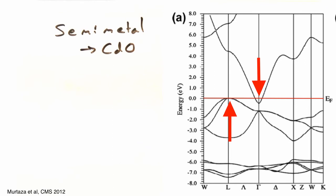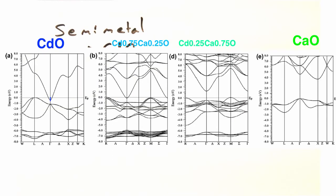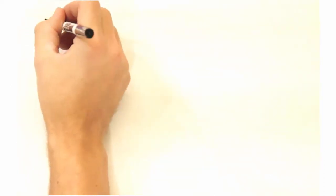You can see this further by looking at alloying with calcium oxide. As we alloy cadmium oxide with calcium oxide, we can pull these bands apart and end up with an insulator.